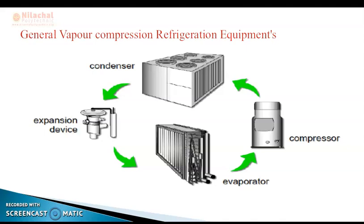The last part covers hermetically and semi-hermetically sealed compressors. The second subtopic is the condenser, where we will discuss the principle of working and construction details of air-cooled and water-cooled condensers, then heat rejection ratio, cooling tower, and the spray pond. The last subtopic is the evaporator, covering the principle and construction details of the evaporator, types of evaporator, bare tube coil evaporator, finned evaporator, and shell and tube evaporator.